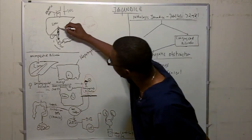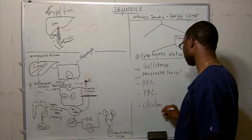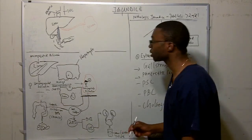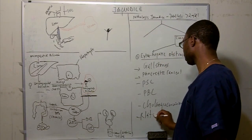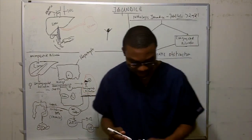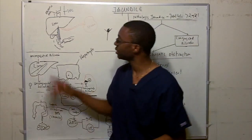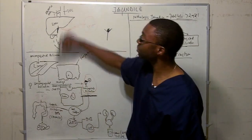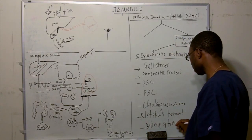Other causes of extrahepatic obstruction include cholangiocarcinoma (cancer of the biliary tree), Klatskin's tumor (intrahepatic ductal tumor at the liver hilum), and biliary atresia (seen in Down syndrome patients, where the biliary tree becomes atretic — every time bilirubin is conjugated, nothing can come out).